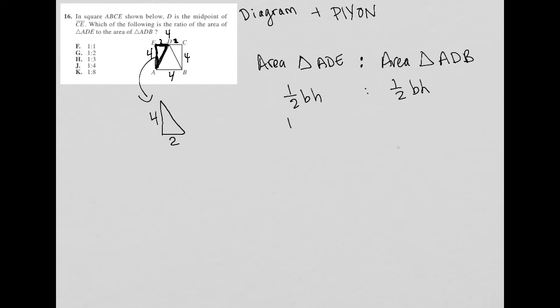So I'm going to say that my base is 2. So I have one half, 2, and my height is 4. And then 2 times 4 is 8, and one half of 8 is 4. So the area of triangle ADE is 4.